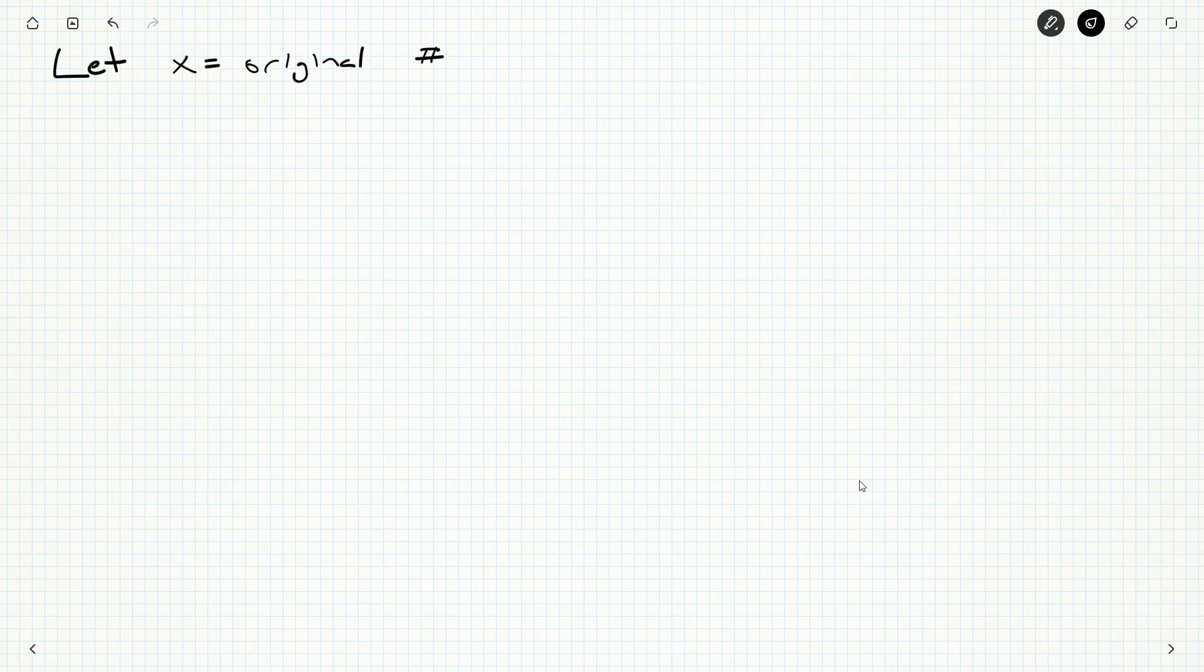So we're going to let x be our original number and then what happens? Well we multiply it by five and then we take away nine and we're told what that becomes 51.